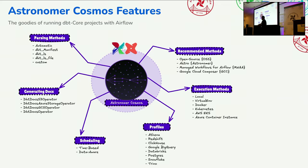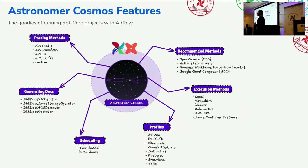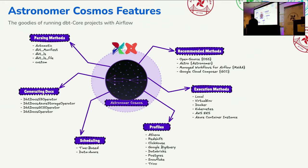We have scheduling — time-based, as we've known since the beginning of Airflow — and there's also data-aware scheduling, which is a game-changer for Apache Airflow overall. Cosmos also offers integration with data-aware scheduling. And for documentation, there's the possibility to store it in different places: S3, GCS, and Azure Blob Storage. We also have the dbt docs operator, which is a callback — you can store it anywhere you want.